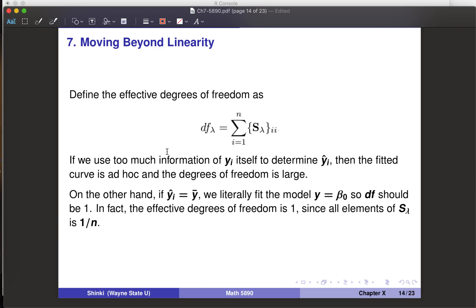Suppose we have y1 to y100, and maybe x1 is close to x2 or x3. If we take the information of y1, y2, y3, for example, the average of y1 and y2 and y3, that isn't really ad hoc. But if we entirely use, for example, 99% weight on y1 and 1% weight on y2, of course the error is smaller, but we made the curve ad hoc.